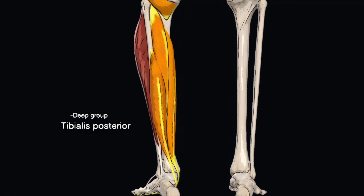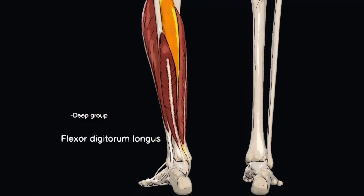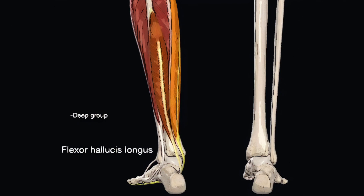The tibialis posterior plantarflexes the talocrural joint and inverts the subtalar joint. The flexor digitorum longus plantarflexes the talocrural joint, inverts the subtalar joint, and plantarflexes the metatarsophalangeal and interphalangeal joints of the second to fifth digits. The flexor hallucis longus plantarflexes the talocrural joint, inverts the subtalar joint, and plantarflexes the metatarsophalangeal and interphalangeal joints of the first digit.